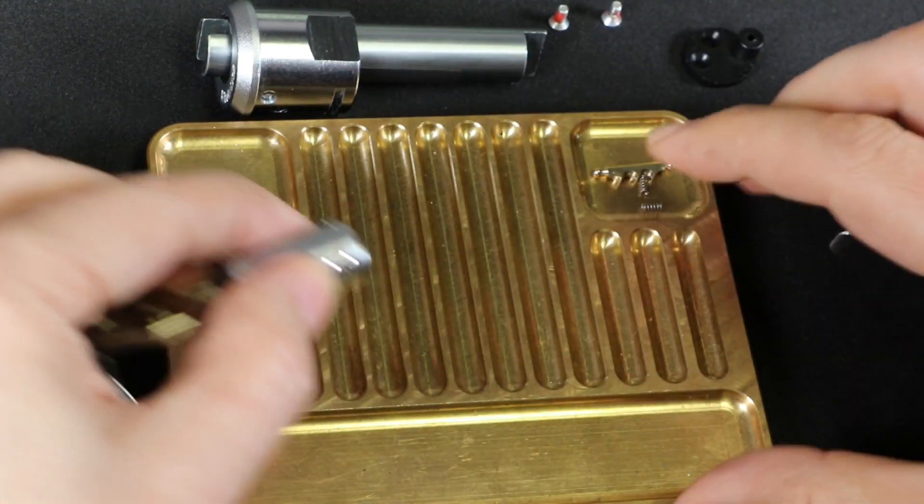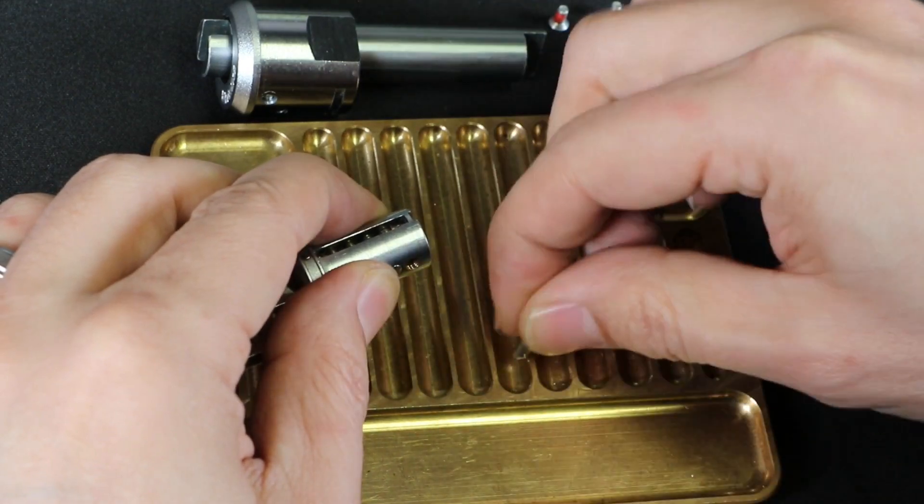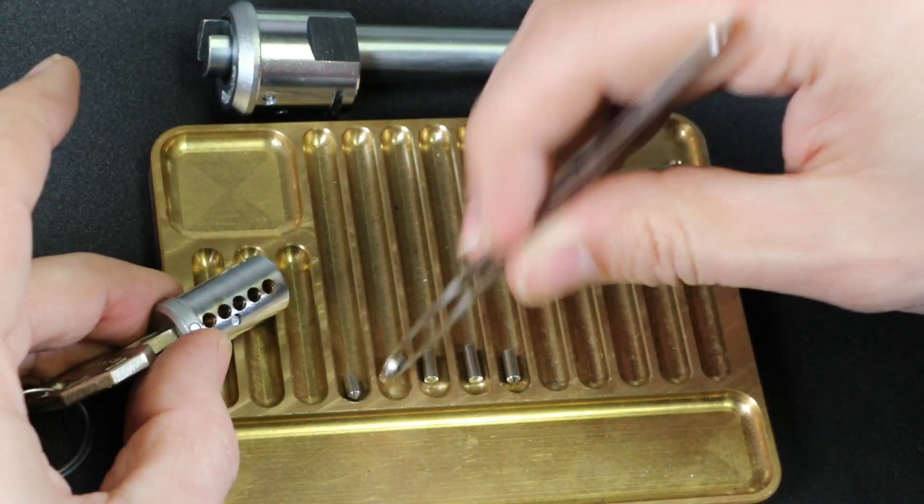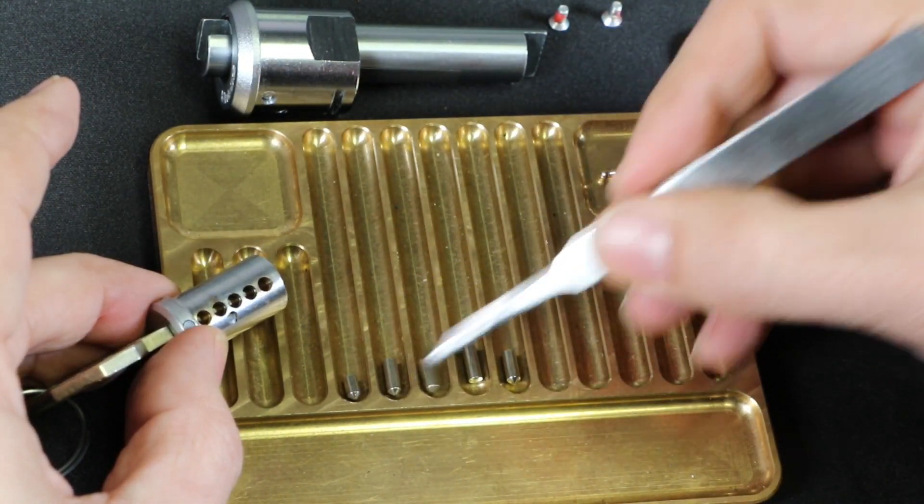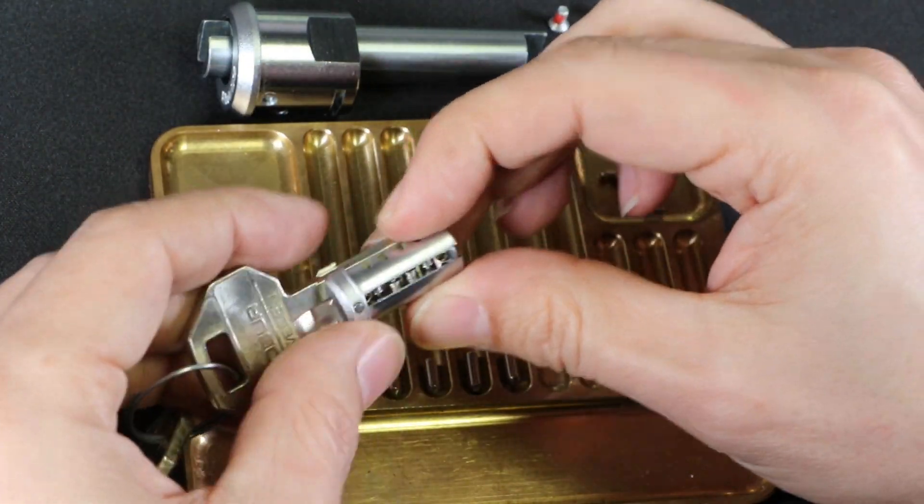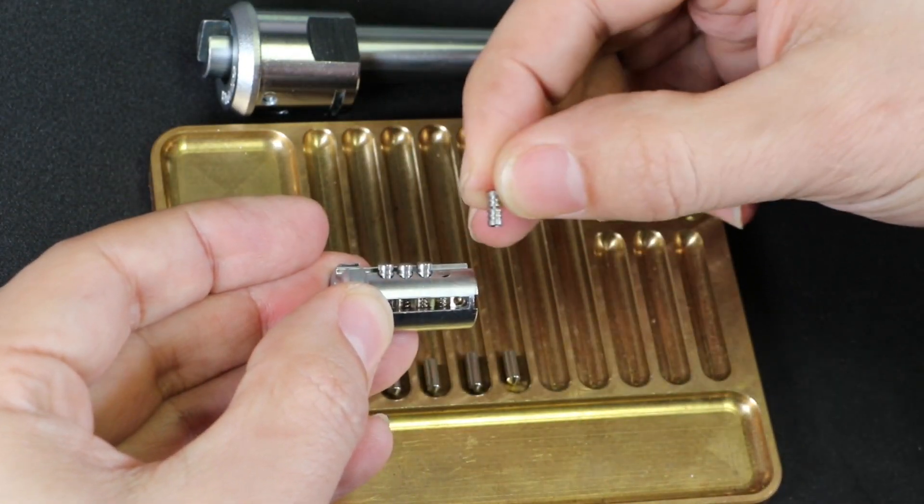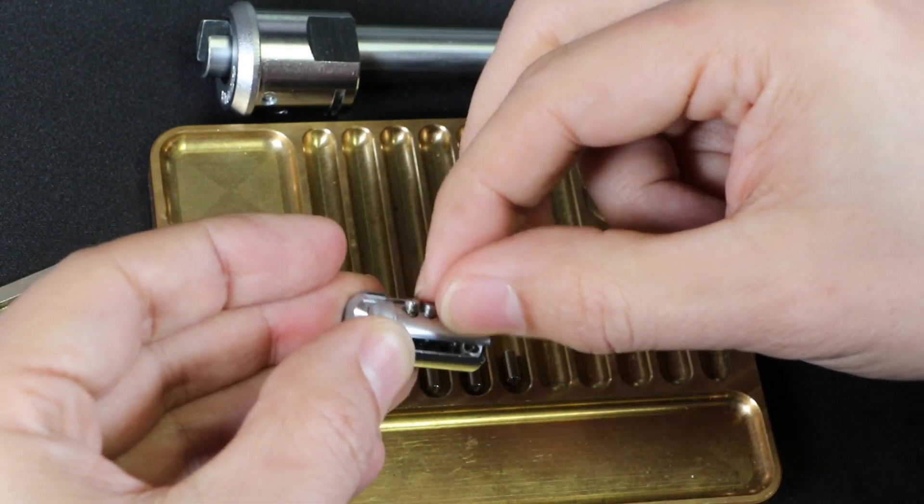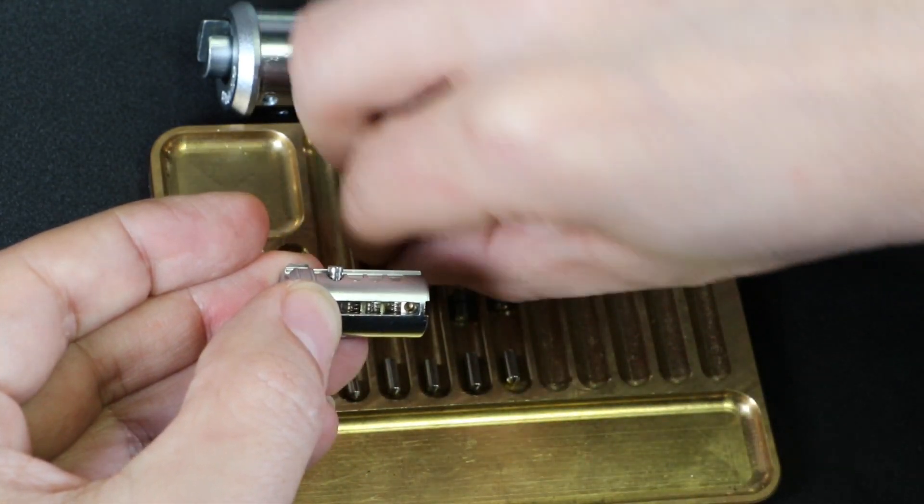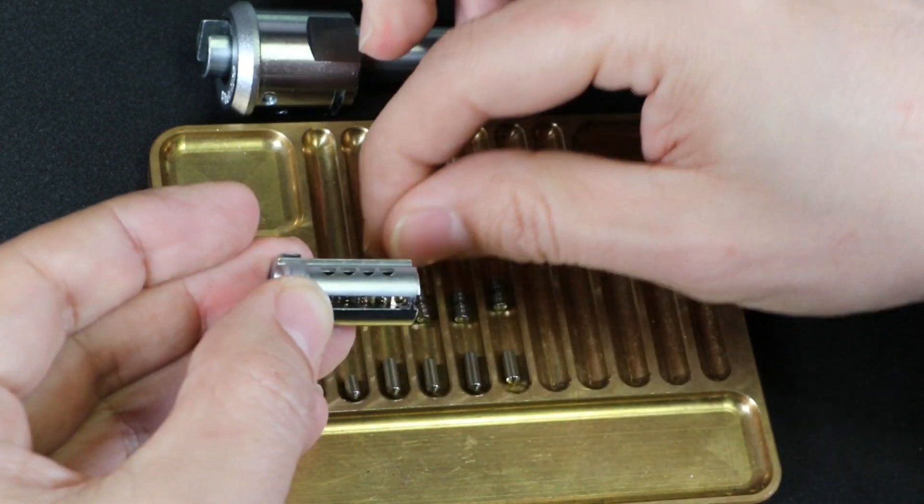And then top pins. Number five. I'm going to leave the key in because that's going to be what's holding the sidebar pins in. So those are all standard key pins. And sidebar pins. Take the key out. So these look like V10 pins maybe from the acid twins. So there's those. They each have a spring.